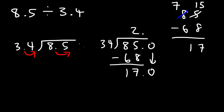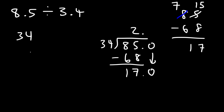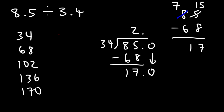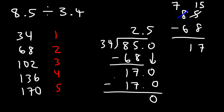How many times does 34 go into 170? Let's make a list: 34, 68, 102, 136, 170 — so 34 goes into 170 exactly five times. Since 34 times 0.5 is 17, the remainder is zero, which means that 8.5 divided by 3.4 is 2.5, and that's the answer for the first problem.